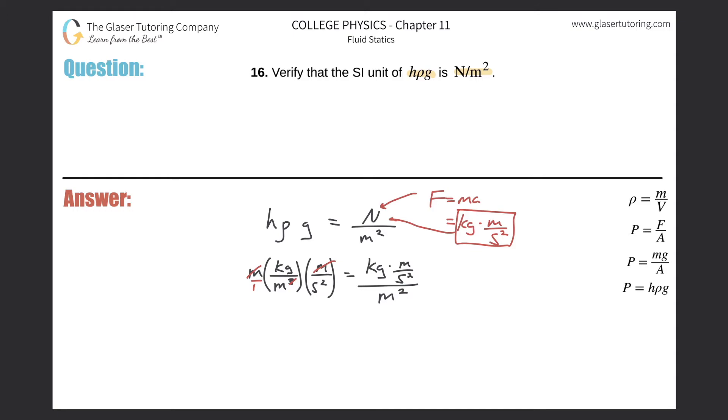So what I'm left with is basically kilogram per meter times second squared. I'm just trying to show that these two sides are equal to one another.